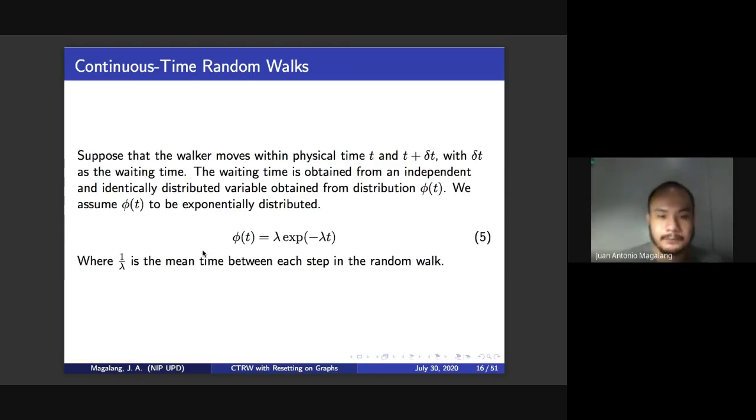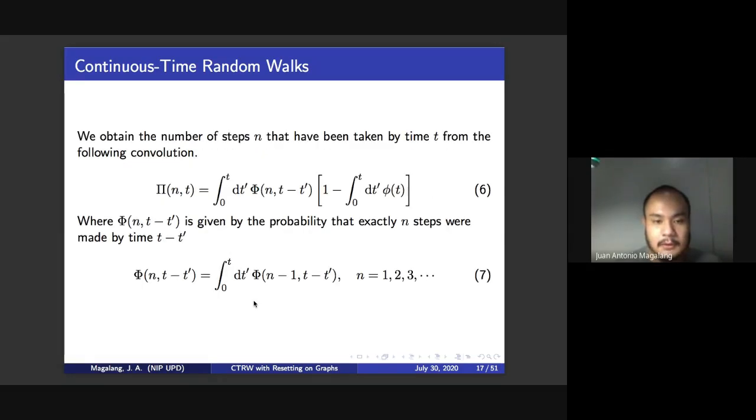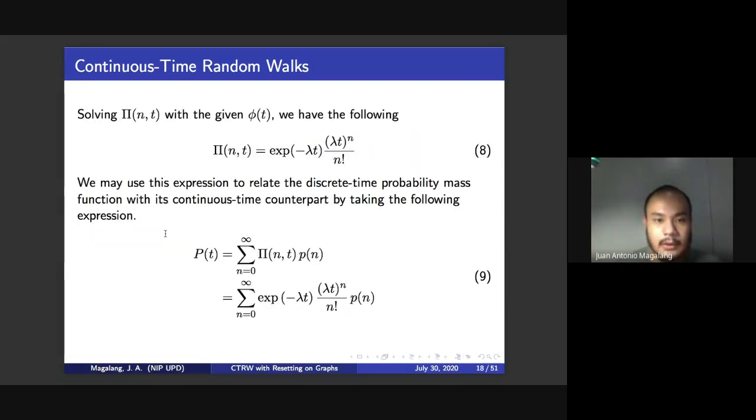Now, we extend this to continuous time. First, we suppose that the walker moves within a physical time t and t plus delta t. This waiting time is obtained from an independent and identically distributed variable phi. Where we, for this problem, assume it to be exponentially distributed given by equation five. So from these two distributions here, pi of n,t and capital phi of n,t minus t prime, where pi of n,t is the number of steps taken by time t, and capital phi n,t minus t prime is the probability that exactly n steps were made by this time difference here. Here, we obtain this simplified distribution since we assume that small phi is exponentially distributed.